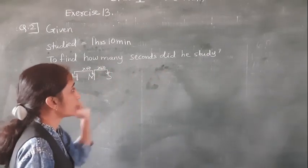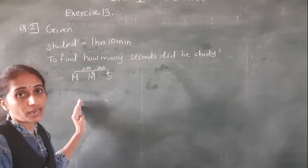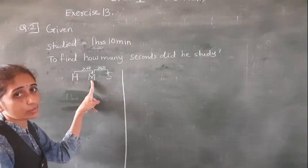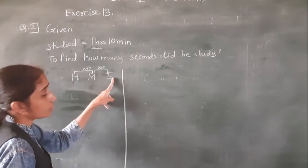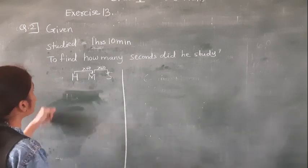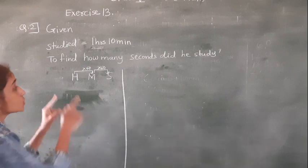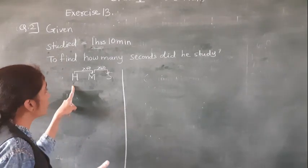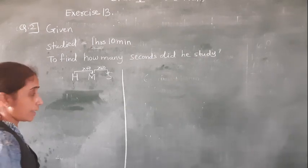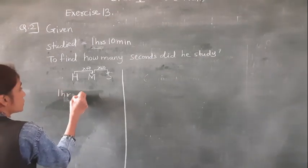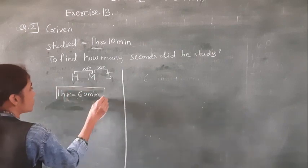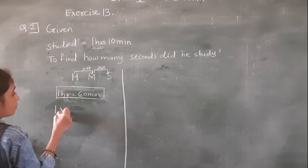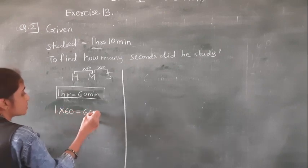We have to convert into seconds. Hours convert into minutes: multiply by 60. Minutes convert into seconds: multiply by 60. We know 1 hour is equal to 60 minutes. 1 hour — how many hours do we have? 1 hour. For 1 hour × 60 we get 60 minutes.